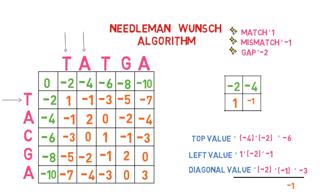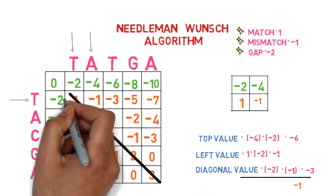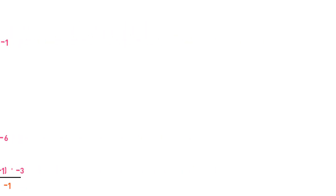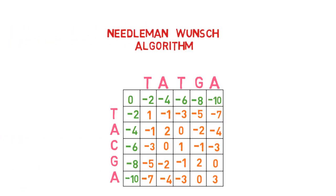The final step is to track back to determine the best alignment. Backtracking begins in the bottom right corner and moves to the top left corner. If the two letters corresponding to the box are the same, we proceed diagonally. If the letters are not identical, we proceed to the highest value on the top and left sides. So let's start backtracking.